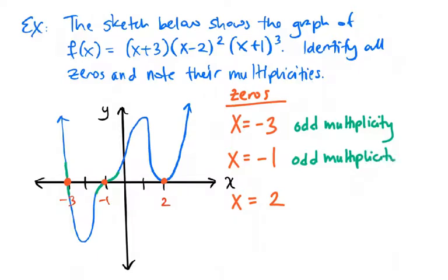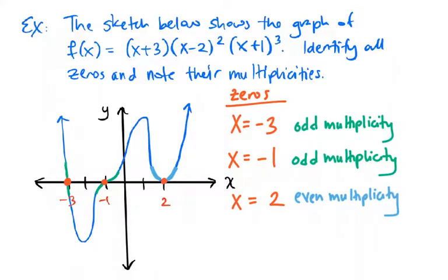Now at x equals two, this fits that perfect idea of bouncing — it approaches two and then bounces off on the same side of the x-axis. So x equals two has to have some sort of even multiplicity. If all I gave you was the graph, what we just wrote down for multiplicities would have been adequate. But because we have the function as well, let's be more specific with these multiplicities.